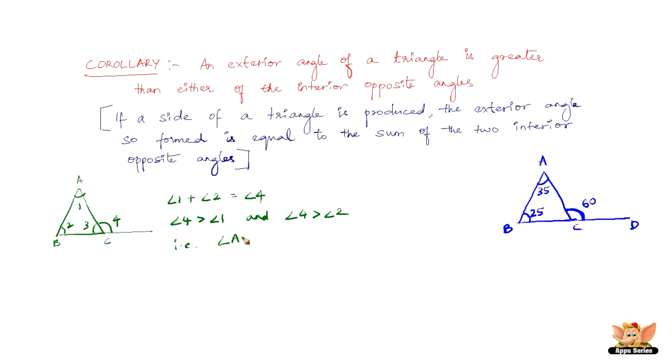That is, angle ACD is greater than angle CAD and angle ACD is greater than angle CBA. So this is what this corollary says. This is the explanation and this was just a simple recap.